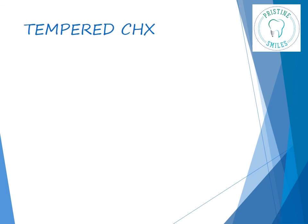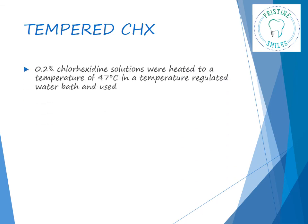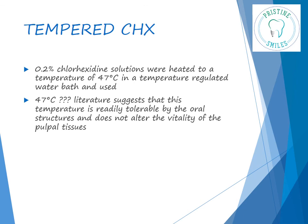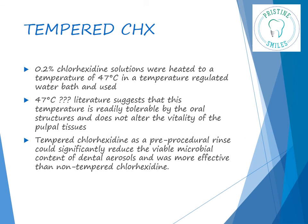The efficacy of chlorhexidine is influenced by temperature, which gave rise to the concept of tempered chlorhexidine. 0.2% chlorhexidine solutions are heated to 47°C in a temperature-regulated water bath and used. Why 47°C? Because literature suggests this is the temperature readily tolerable by oral structures and does not alter the vitality of the pulpal tissues. Tempered chlorhexidine as a pre-procedural rinse could significantly reduce the viable microbial content of dental aerosols and was found to be more effective than non-tempered chlorhexidine.